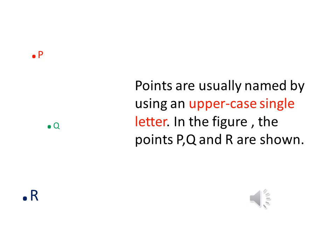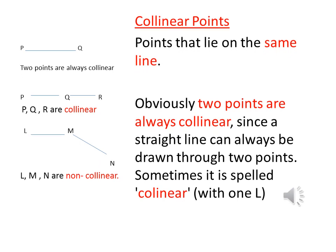Points are usually named by using uppercase single letters. For example, you can see in the figure we have three points: the red one P, the green one Q, and the blue one R. We always use points in groups, and different groups of points are differentiated on the basis of their arrangement on a plane or in a space.